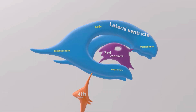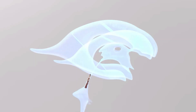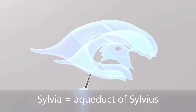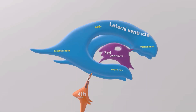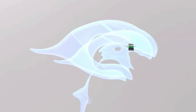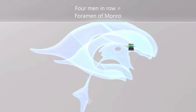Between the third ventricle and the fourth ventricle there is a cerebral aqueduct of Silvius, which is really narrow. Perhaps we can imagine a very skinny lady named Sylvia — Sylvia reminds us of the cerebral aqueduct of Silvius. Another anatomical landmark between the lateral ventricle and the third ventricle is the foramen of Monroe. Perhaps we can imagine four men in a row — four men in a row for foramen of Monroe.